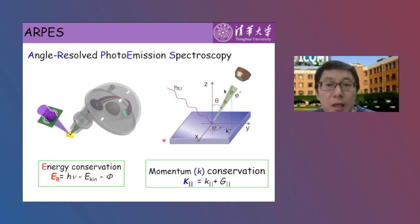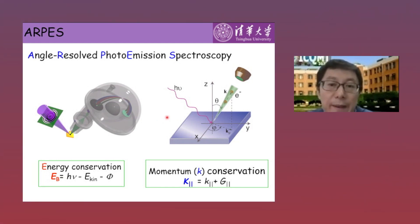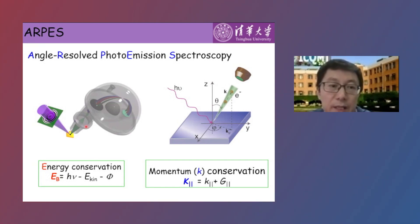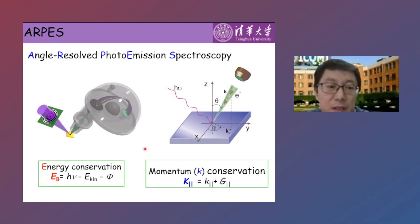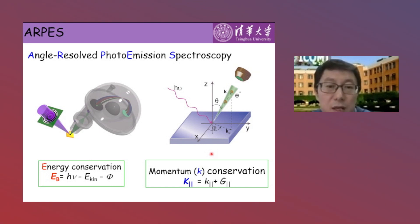Our experimental tool is the angle-resolved photoemission spectroscopy, ARPES. The basic working principle is the photoelectric effect explained by Einstein. A photon beam excites electrons out of the solid materials and an electron analyzer is used to collect the emitted electrons and measure their momentum and energy. By a simple calculation based on energy and momentum conservation laws, we can get the energy-momentum distribution, which is the band structure of the solids.